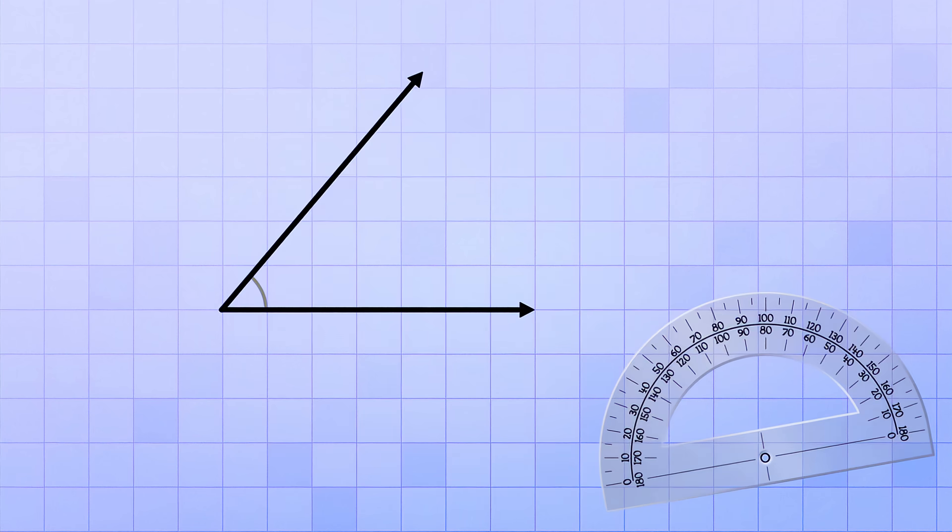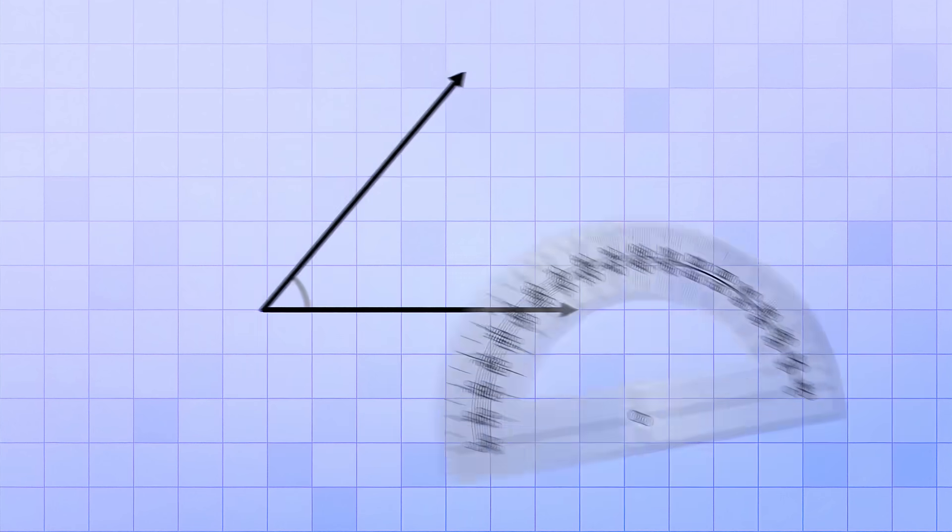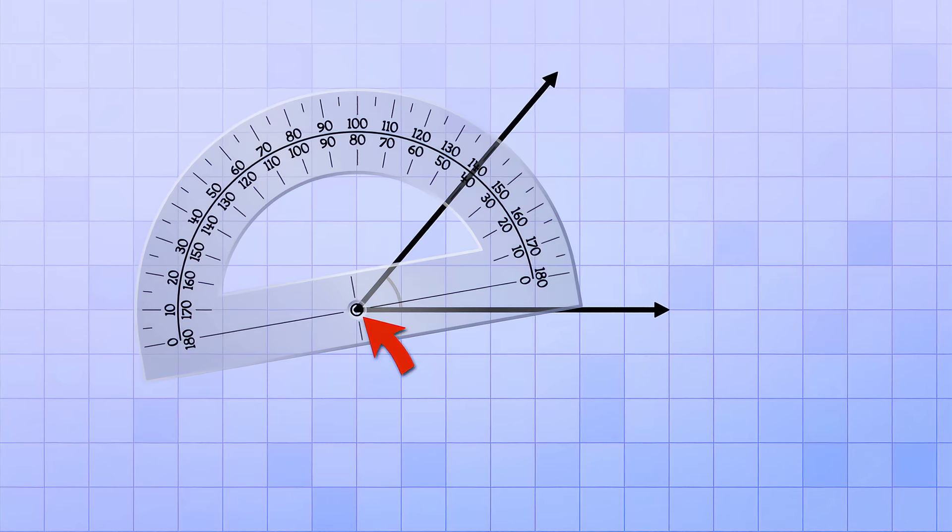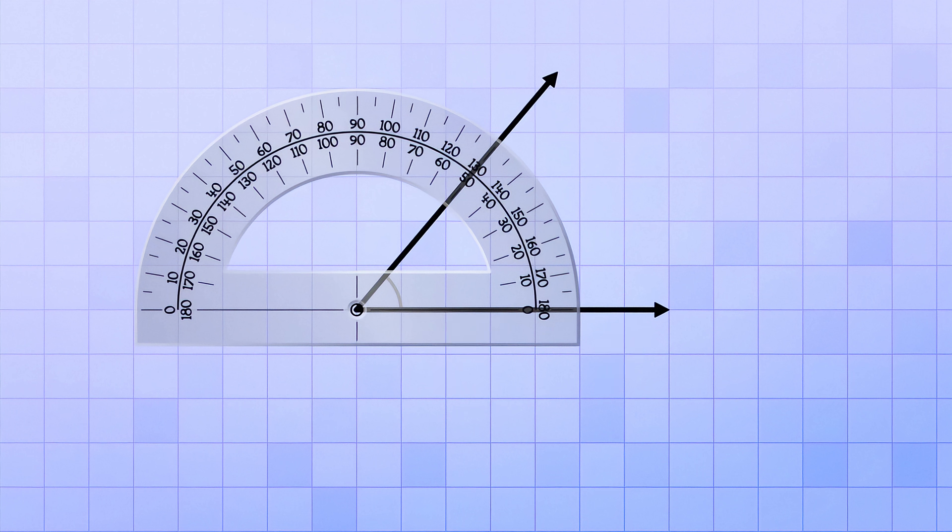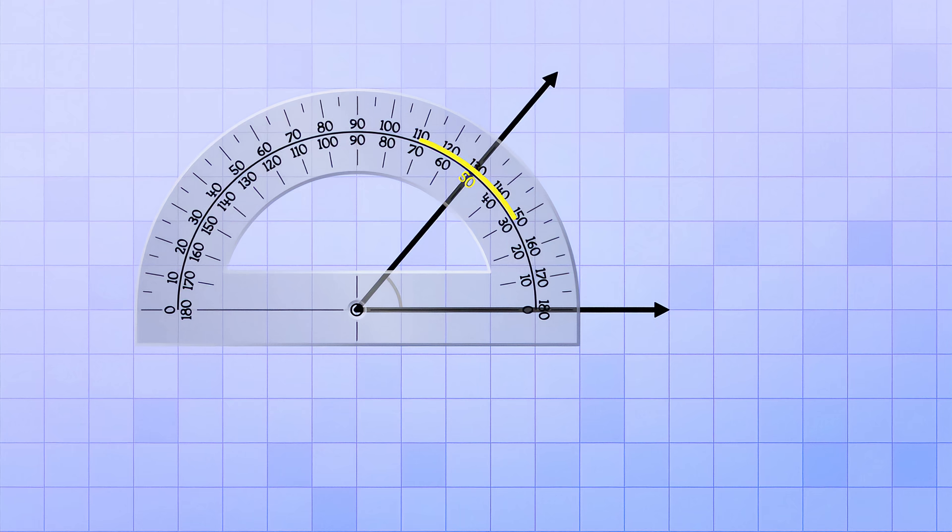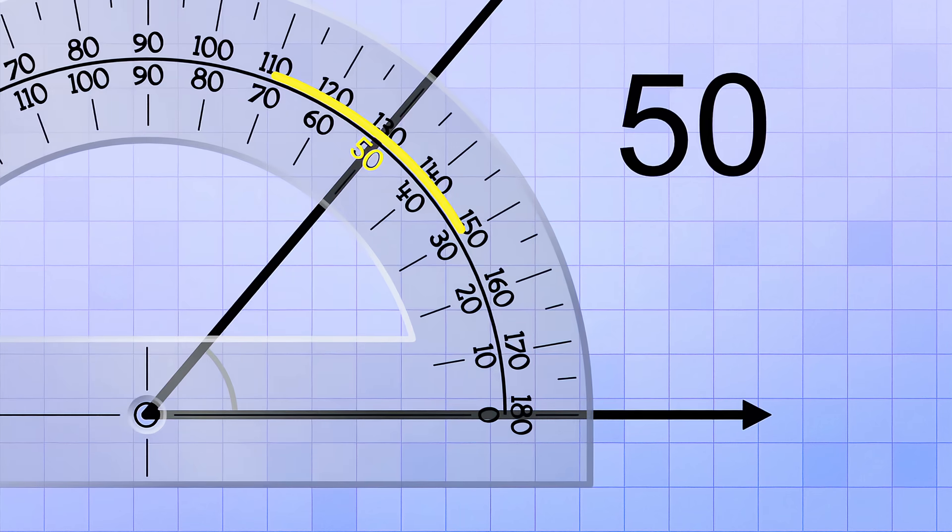So if you're given a mystery angle, like this one, and you want to measure how many degrees it is, you just put your protractor on top of it so that the axis point lines up with the intersection of your rays, like this. Then you make sure that one of the rays lines up with the straight line on the protractor. And last of all, you look to see where the other ray crosses the curved part and read off what angle measurement it lines up with. As you can see, this angle here is 50 degrees.